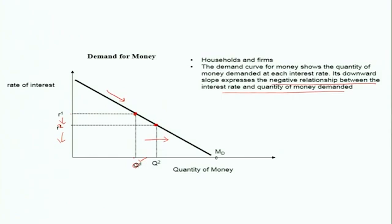The question is: why do households demand more money when the rate of interest decreases? People demand money mainly for three motives: one is the transaction motive — called transaction demand for money; the second is the precautionary motive — precautionary demand for money; and the third is speculative demand for money. Today we will discuss transaction and precautionary demand for money. Speculative demand will be discussed in the next session, as it needs more detailed discussion.